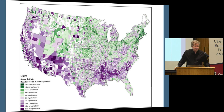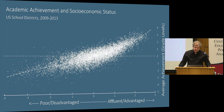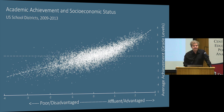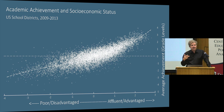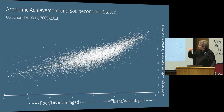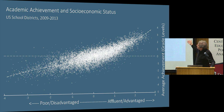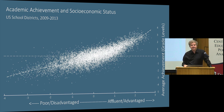So clearly kids grow up in different places with different amounts of opportunity to learn. The question is why. To what extent is that variation related to kids' socioeconomic status? For every school district we construct a measure of average socioeconomic conditions — an index of family income, parents' education levels, poverty rates, SNAP eligibility rates, unemployment rates, and single parent household rates. Zero means average, positive means above average, negative means below average.